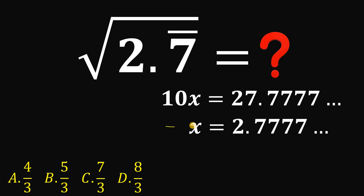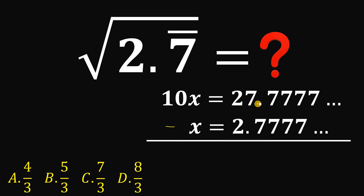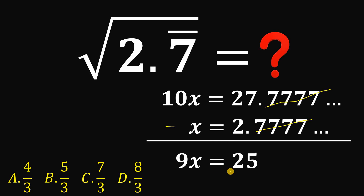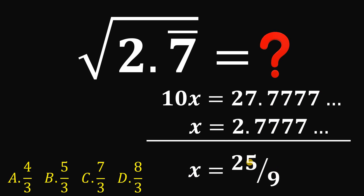Now, if we subtract these two equations, we get 10x minus x, which is just 9x. This infinite number of 7s after the decimal point is totally gone — it's just 0. And 27 minus 2 is just 25. So this gives us 9x equals 25, with no repeating decimal. To solve for x, let's divide both sides by 9, so x equals 25 over 9.